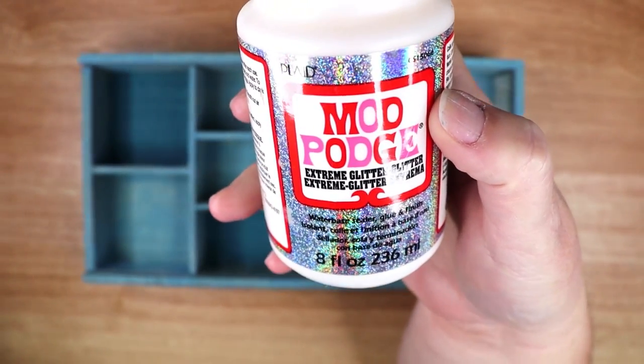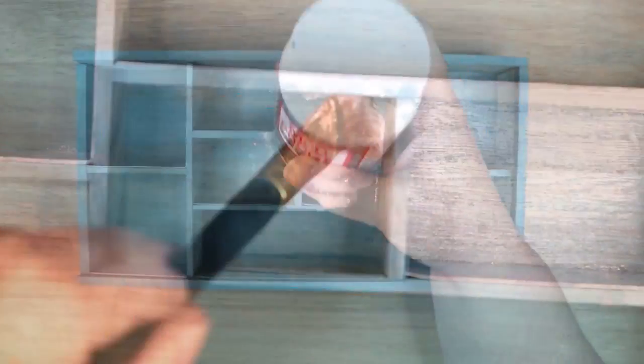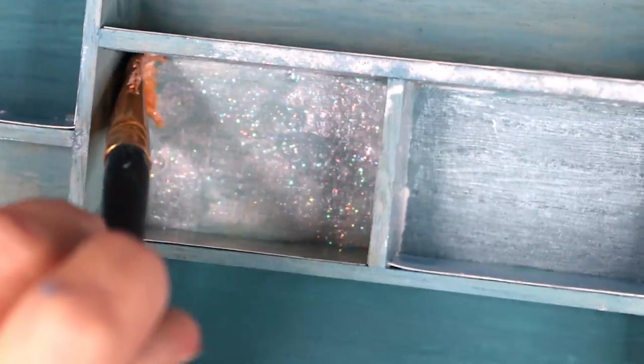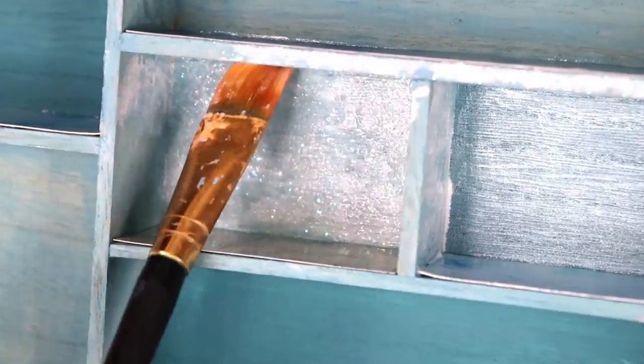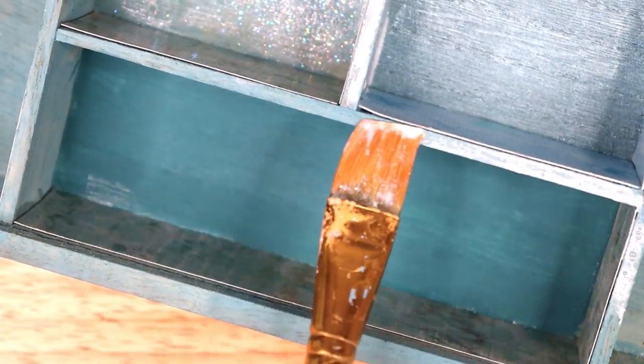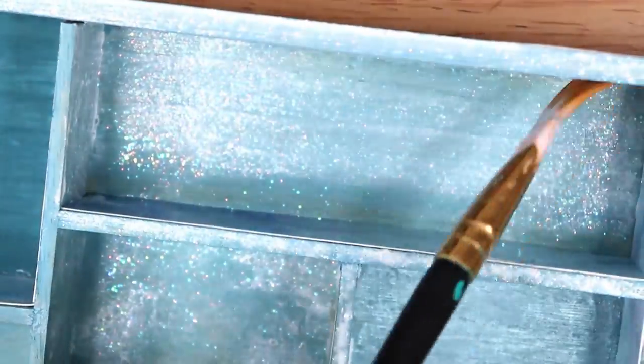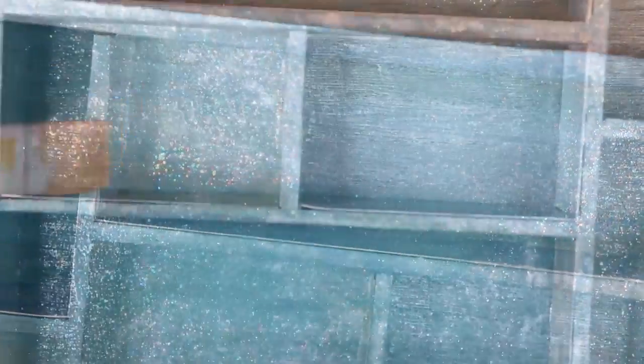The final step in the box decoration is to add some glitter. I am using Mod Podge Extreme Glitter. I am using a very thin layer of this glitter and painting the sides of some of the compartments and the backs of others for variation. I love the way this glitter looks like wet sand in the sunlight.